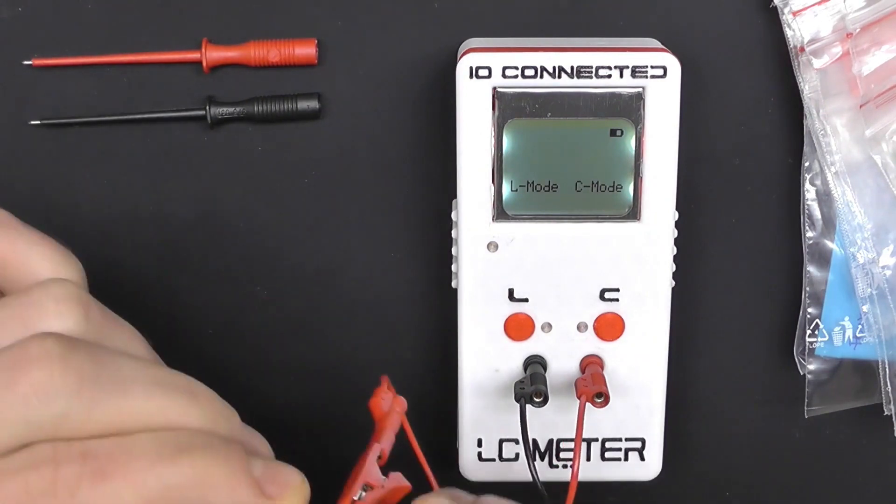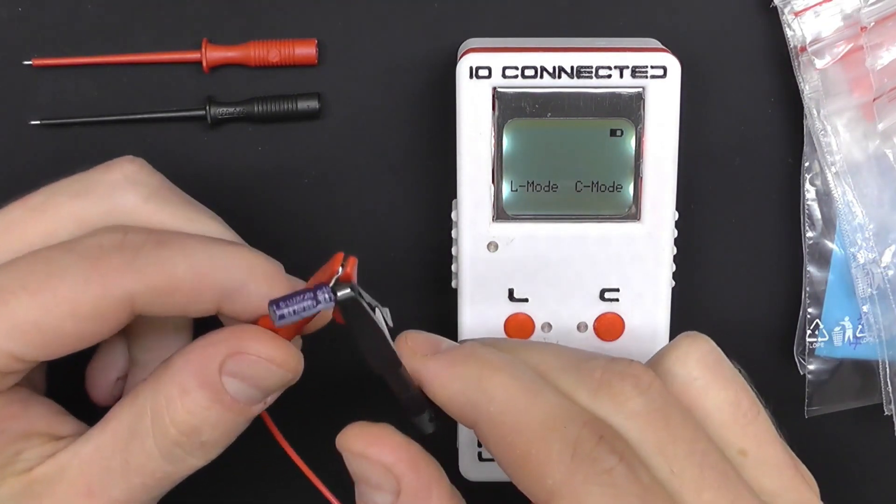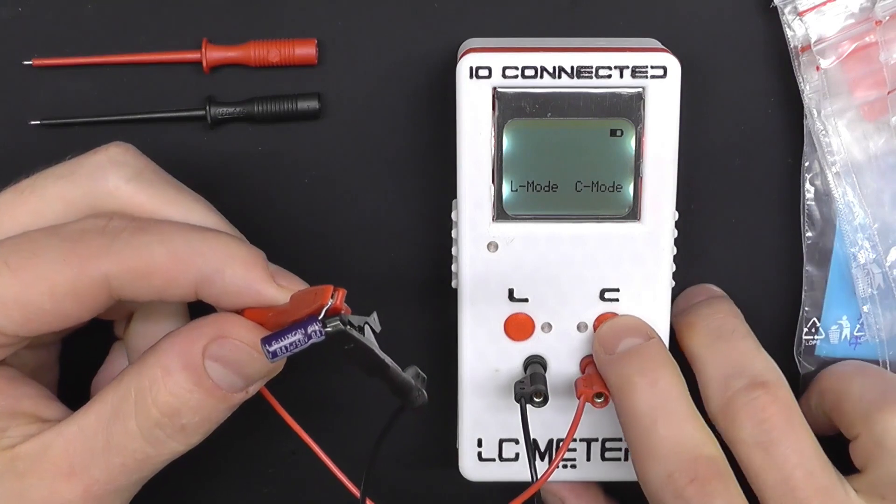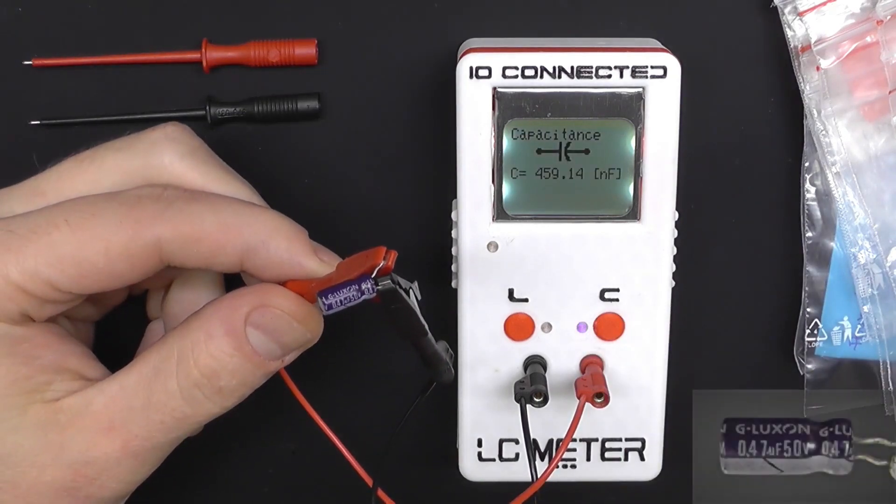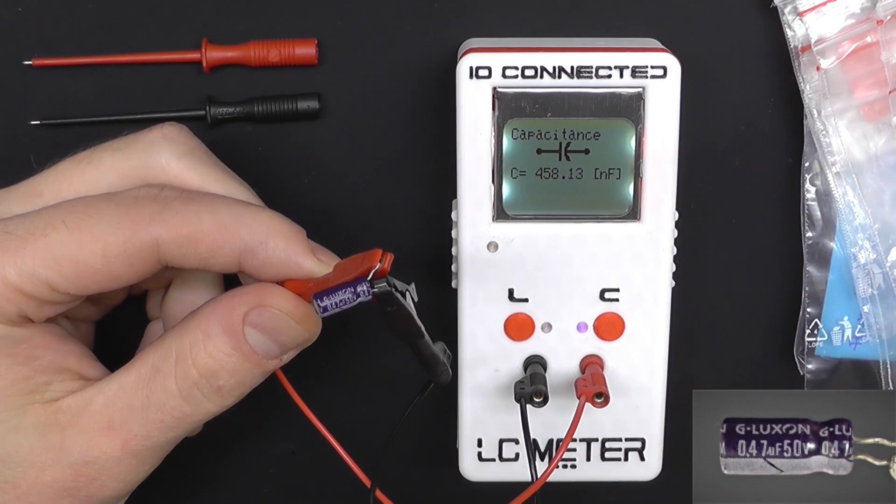I'm going to start with this electrolytic capacitor. This is a 0.47 microfarads. Each time I do a measurement, there's going to be a close-up image of the part appearing in a corner.